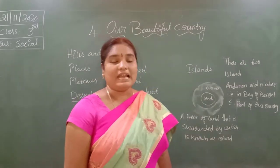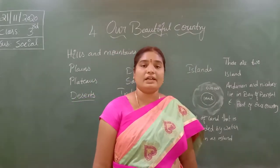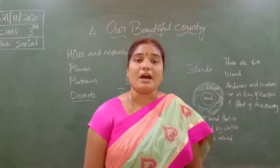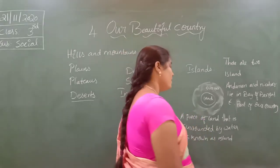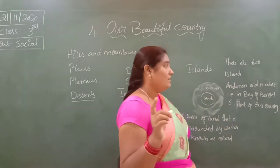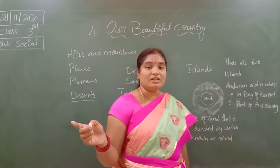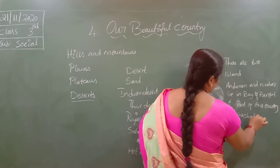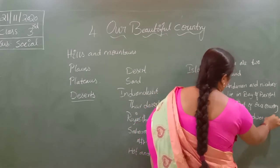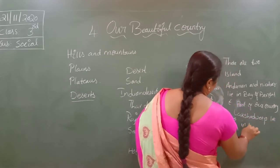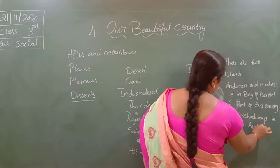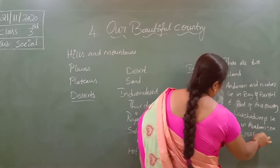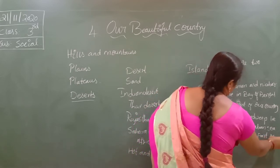Next, Lakshadweep islands. Lakshadweep islands are located in the Arabian Sea, in the west part of our country. There are two islands in our country: one is Andaman and Nicobar, and the other one is Lakshadweep. Lakshadweep lies in the Arabian Sea, in the west part of our country.